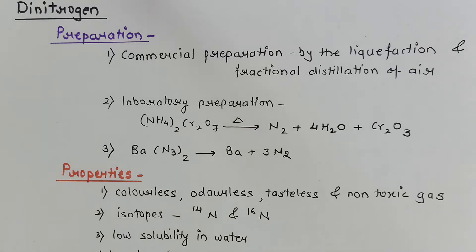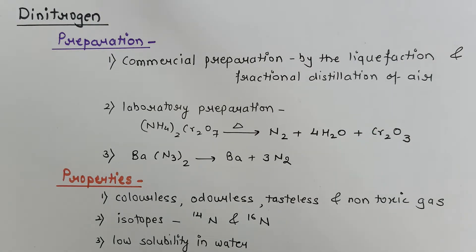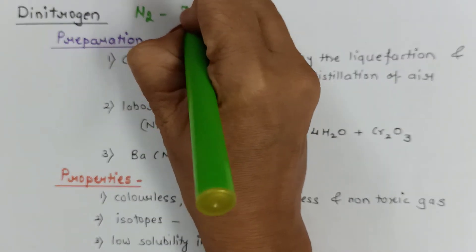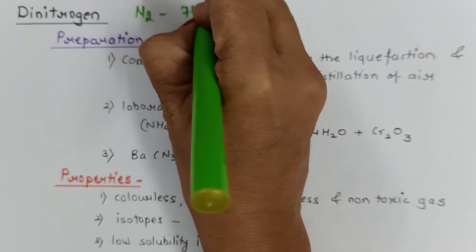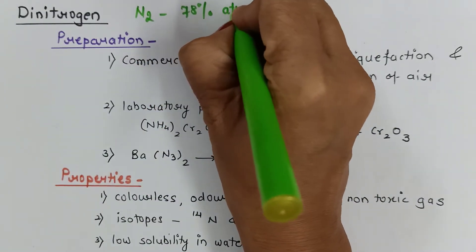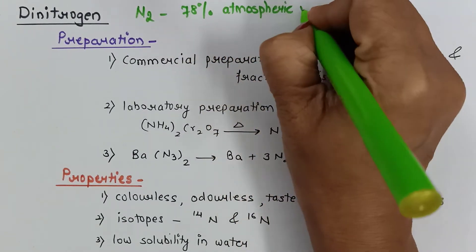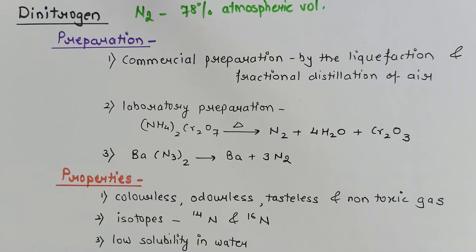Hello students, today's video will be based on nitrogen and its compounds. We'll begin with dinitrogen. We know dinitrogen is a major component of the atmosphere; it exists as N2 and occupies near about 78% of atmospheric volume.